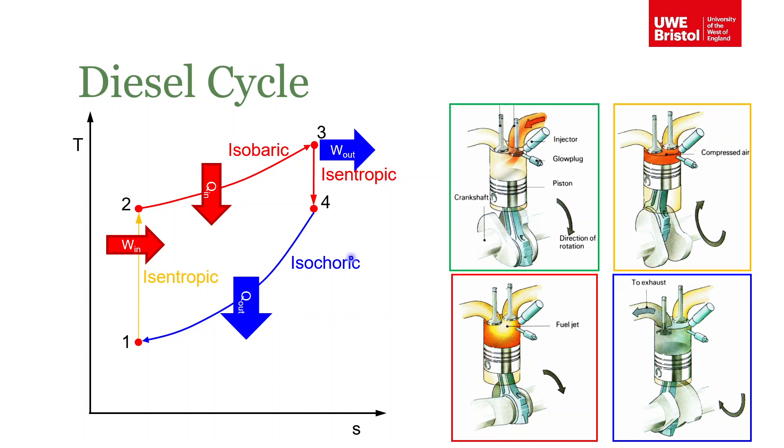What that looks like on a TS plot is actually fairly similar to how it looks for an Otto cycle. Both the compression and expansion strokes seem to be isentropic, so straight lines on this TS plot. But the main difference is we've got isobaric heat addition and isochoric heat rejection.